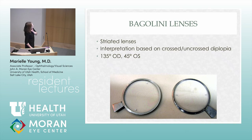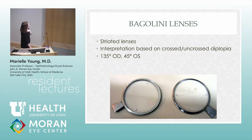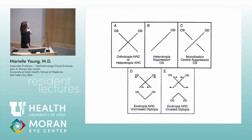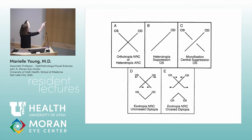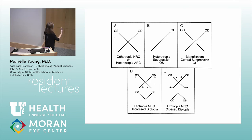Bagolini lenses can be used to interpret crossed and uncrossed diplopia, and also to assess torsion. One lens is at 135 degrees and one is at 45 degrees. If someone has orthotropia and is looking together, they should see a nice X pattern. If they're suppressing their left eye, they'll only see the line from the right eye — the X will be incomplete or missing in the middle.